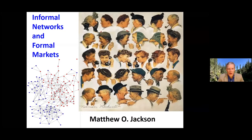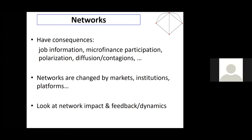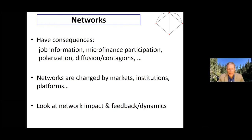The ideas here are twofold. It's no loss to the people in the society that networks have consequences. They control flow of information. They control people's participation and their roles in things like polarization, diffusion, and contagions. And they're also shaped by the institutions that they affect. So they can be changed by markets, and they can be changed by platforms and other things. One thing we need to better understand as scientists is how networks are impacted by their surroundings and what kind of feedback and dynamics they have.